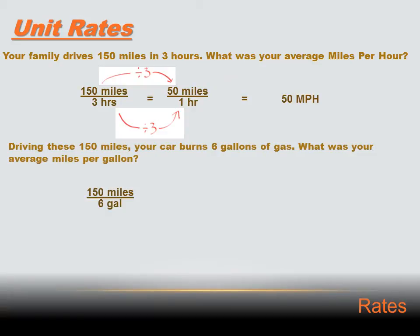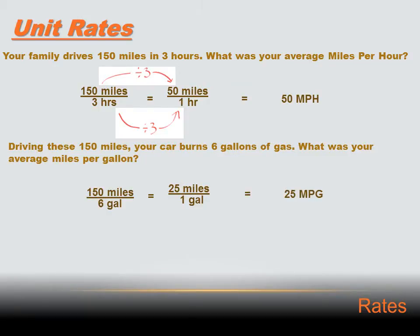Driving those 150 miles, your car burns six gallons of gas. What was your average miles per gallon? Write down the rate: 150 miles per six gallons. You need a unit rate — per single gallon, not per six gallons. Divide the six gallons by six to get one gallon, then divide 150 miles by six as well. You get 25 miles per one gallon, or 25 miles per gallon.